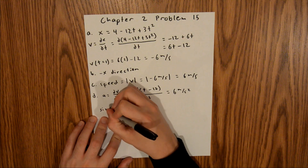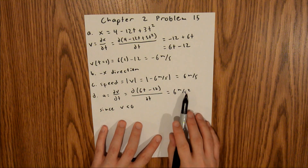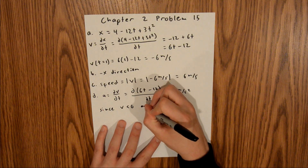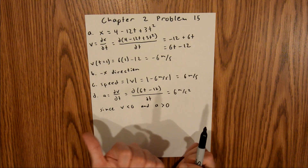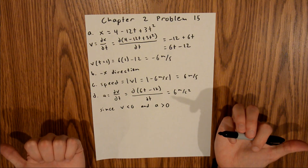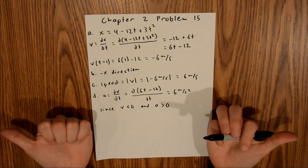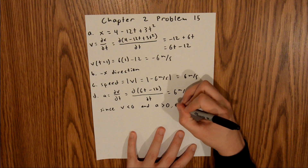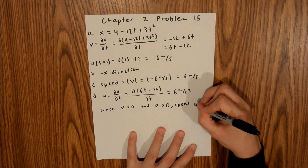Our velocity is negative 6 meters per second, so velocity is less than 0, and our acceleration is 6 meters per second squared, so acceleration is greater than 0. Since velocity is pointing in the negative x direction and acceleration is pointing in the positive x direction, our velocity is decreasing in magnitude, which means our speed is decreasing. That's your final answer for part D.